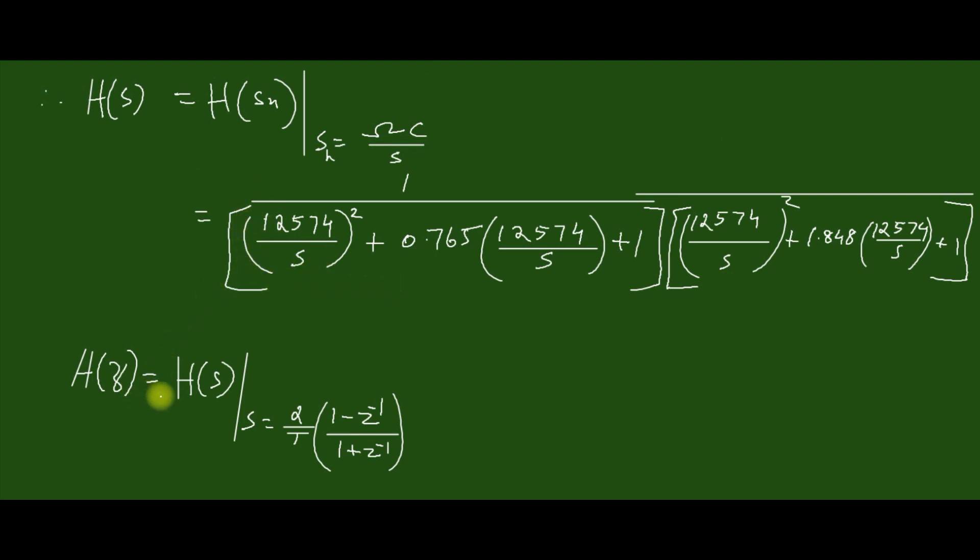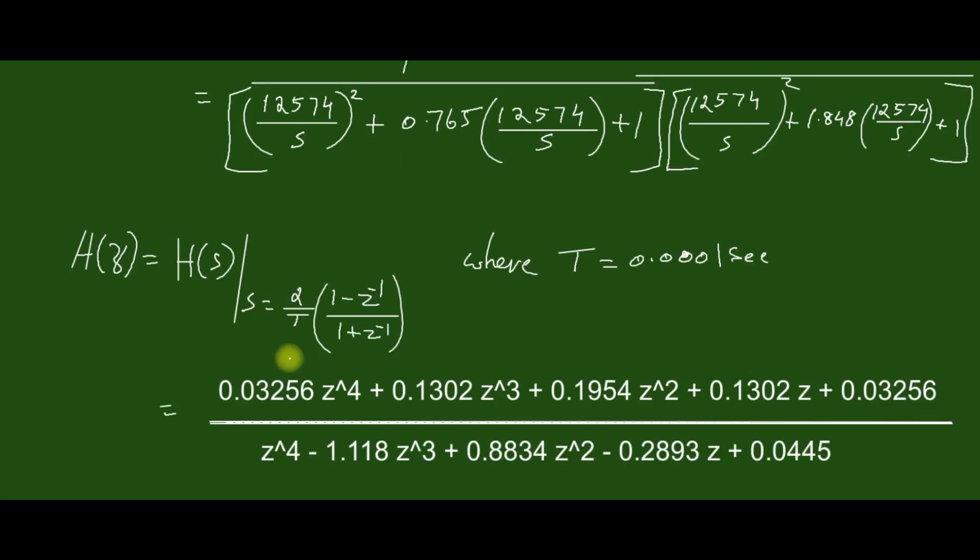We can obtain H(z) by replacing s with (2/T)·(1 - z^(-1))/(1 + z^(-1)), where T is given as 0.1 milliseconds, which equals 0.0001 seconds. Substituting and simplifying, finally you may get an answer in this form.